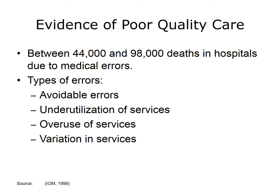The Crossing the Quality Chasm report was spurred on in part by prior reports. The first report, mentioned earlier, called To Err is Human, provided substantive evidence of quality problems. An oft-quoted number from this report is that at least 44,000 Americans die in hospitals each year because of preventable medical errors, and that this number could be as high as 98,000.